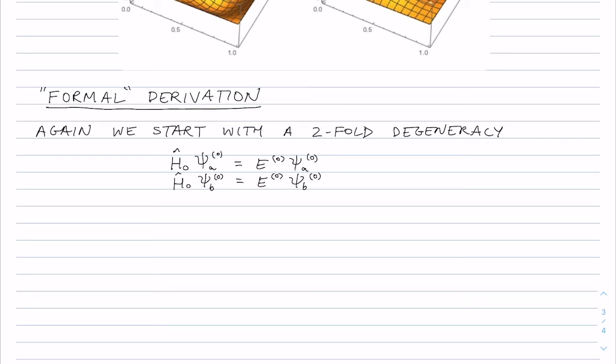Now the fact that it's a twofold degeneracy just makes our life a little bit easier but we'll see as we go that it's very easy to generalize this method for if it's a threefold or fourfold degeneracy. If there are more levels with the same energy, it's very easy to expand it.